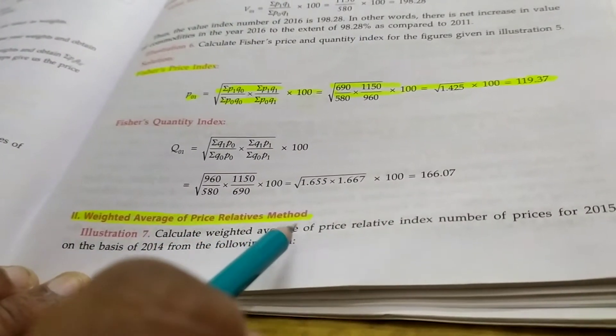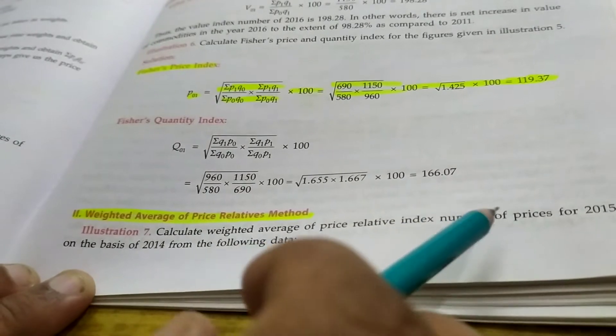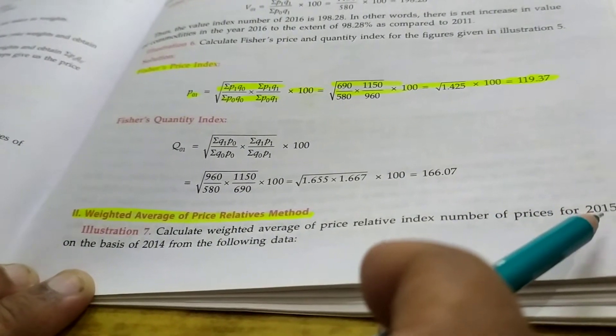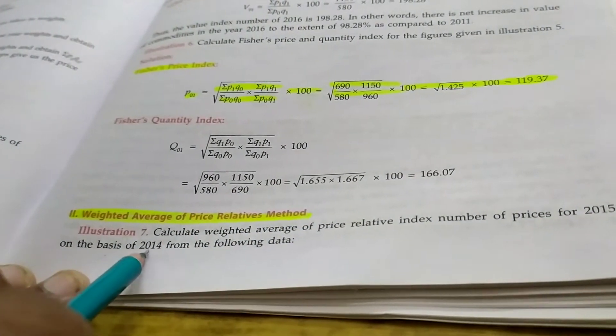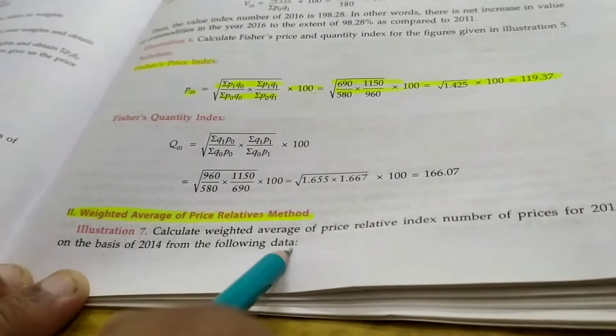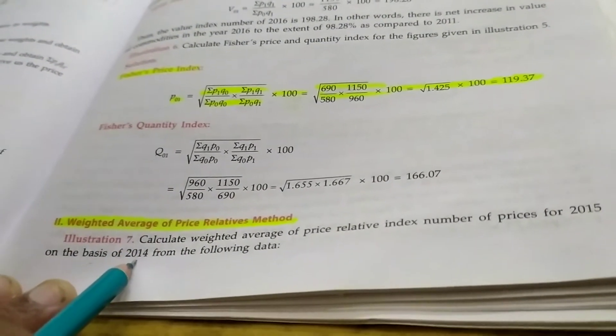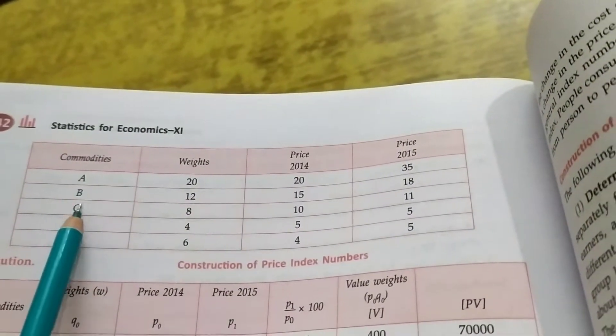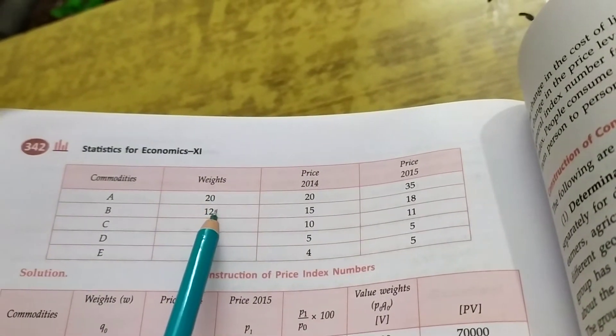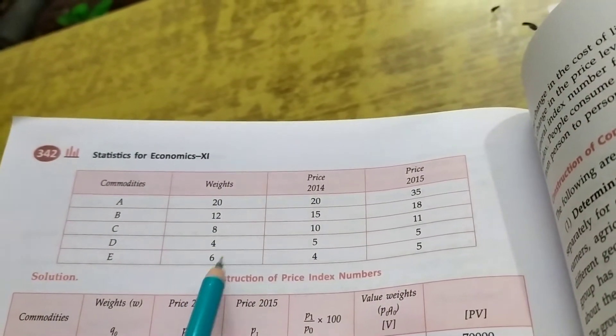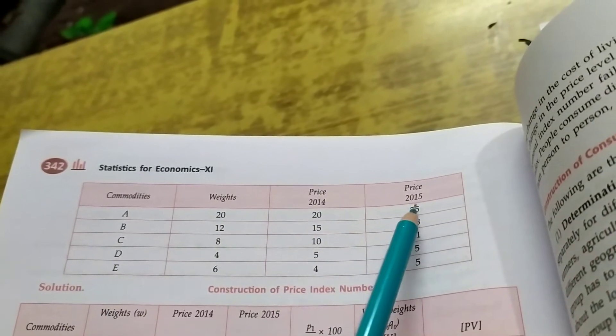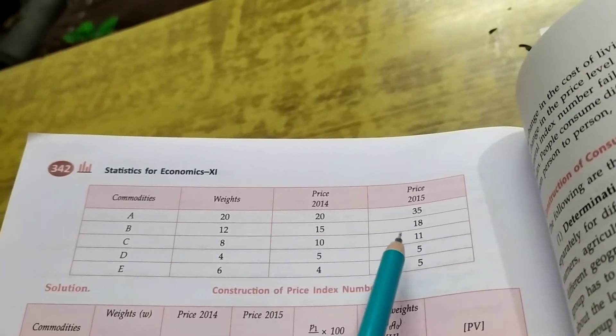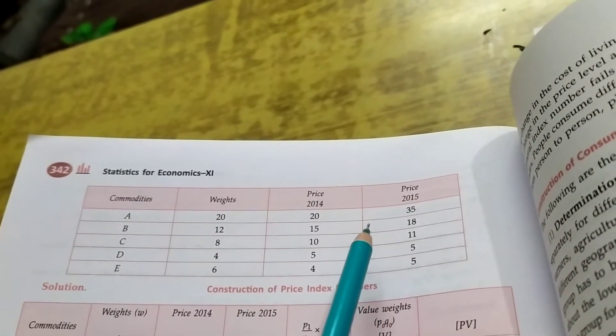Now just I am doing illustration number 7 of NCERT book: Calculate weighted average of price relative index number of prices for 2015 on the basis of 2014 from the following data. Here 2014 is base year, 2015 is current year. Now students, this is my question.